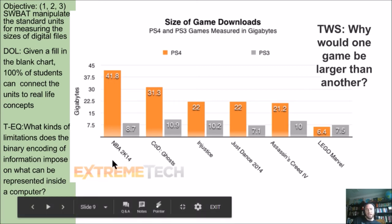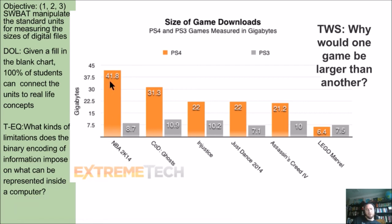Here's an optional challenge, especially for gamers: Why does NBA 2K go from 41 gigs on PS4 down to 8 gigs on PS3, while Call of Duty Ghosts goes from 31 down to 10? Why is PS3's Call of Duty Ghosts larger than PS3's NBA 2K, yet on PS4 the NBA 2K is the largest one and Call of Duty is not? Why?